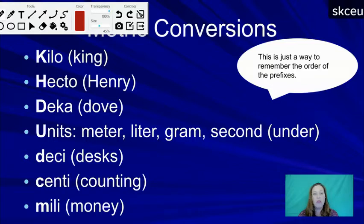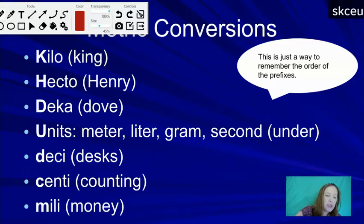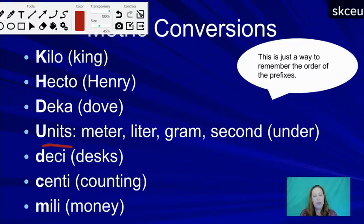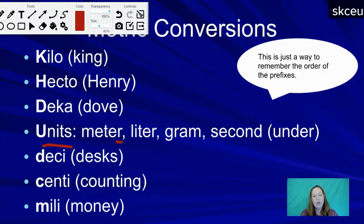The metric prefixes are: kilo, hecto, deca, base unit, deci, centi, and milli. As you go from one to the next, you're adding a factor of 10. A mnemonic to remember the order is 'King Henry Dove Under Desks Counting Money.' Another version is 'King Henry Died Monday Drinking Chocolate Milk,' using meters as the base unit. A kilometer is 1,000 meters.